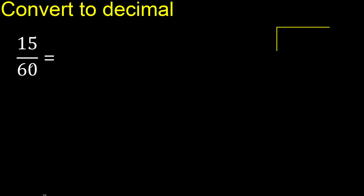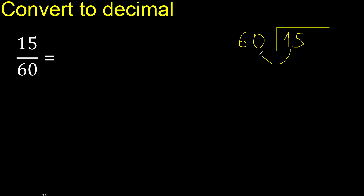15 divided by 60. 15 is less, therefore complete — always complete with 0. Here, 0 point. 0 is not less than 60.